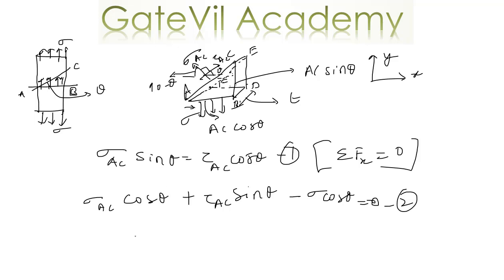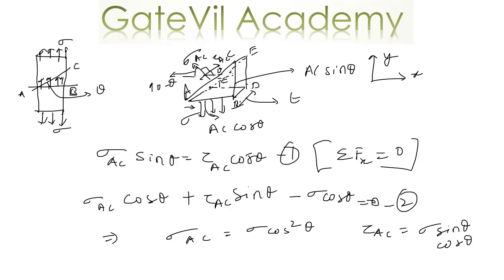By solving these two linear equations, we get sigma_AC equal to sigma cos squared theta, and tau_AC equal to sigma sin theta cos theta. You can substitute sigma_AC from the first equation into the second to get tau_AC, and then back-substitute to get sigma_AC. Solving these two equations will be your task. Till then, bye.